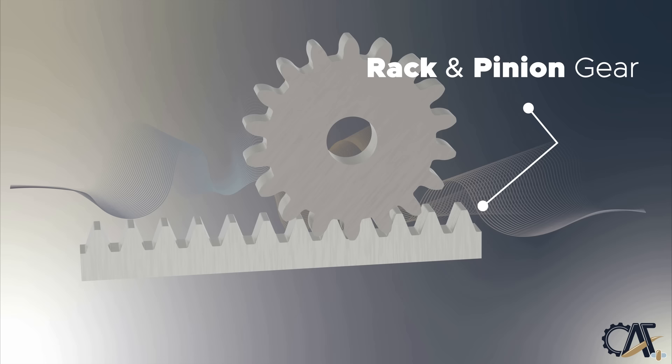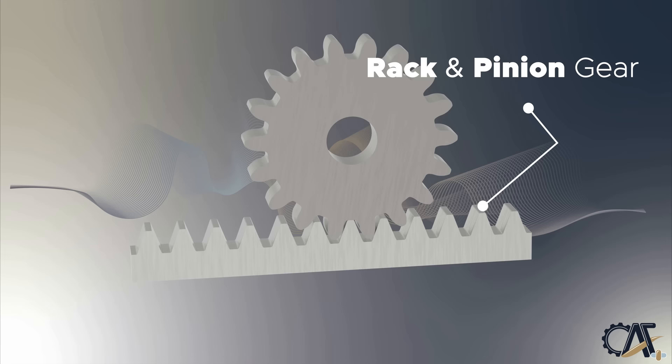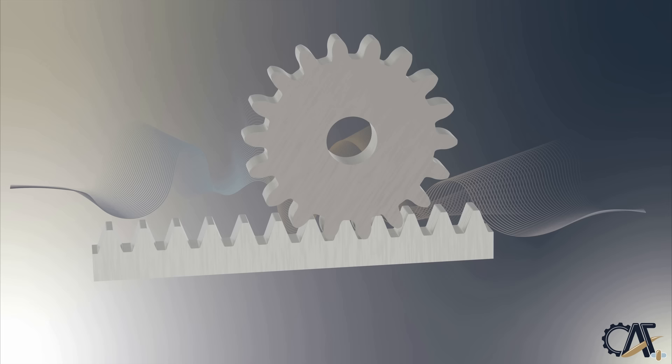A rack and pinion is a type of linear actuator that comprises a circular gear, the pinion, engaging a linear gear, the rack, which operates to translate rotational motion into linear motion. Driving the pinion into rotation causes the rack to be driven linearly.